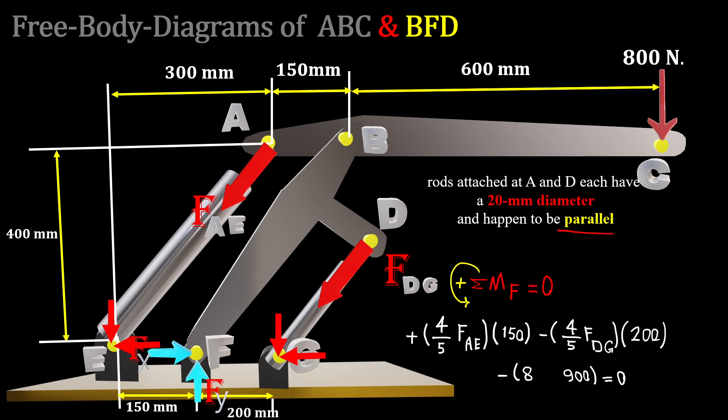That's positive based on our direction. Minus 4/5 FDG, and this time this is clockwise, that's a negative one, times 200 which is this distance. And minus 800, which is this force, times 900 millimeters. So the distance between C and F is just the overall length, which is 600 plus 300, that's 900, plus 150, subtract 150.